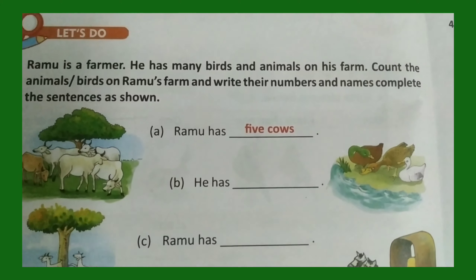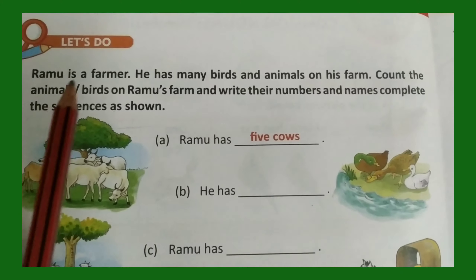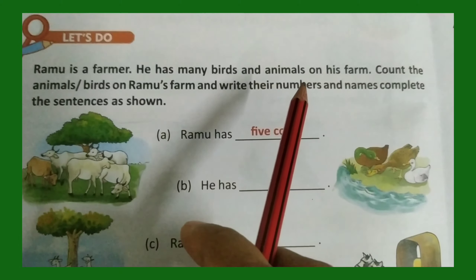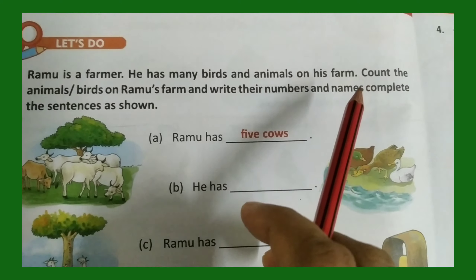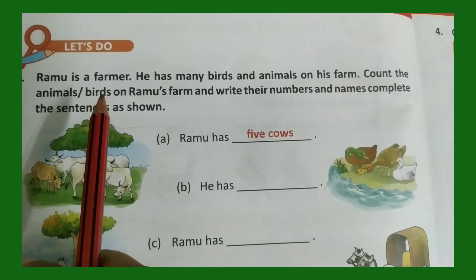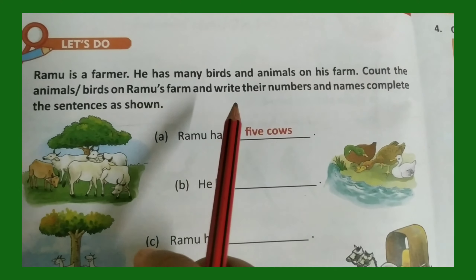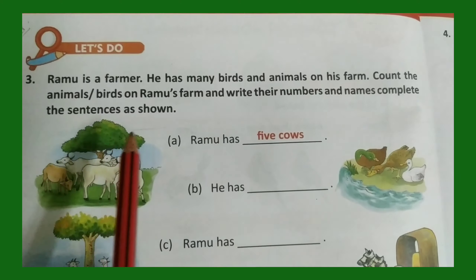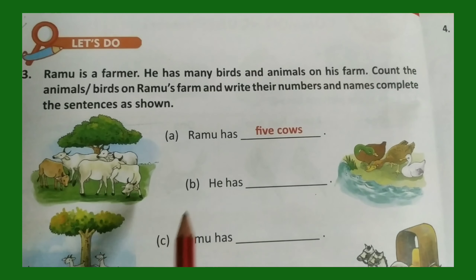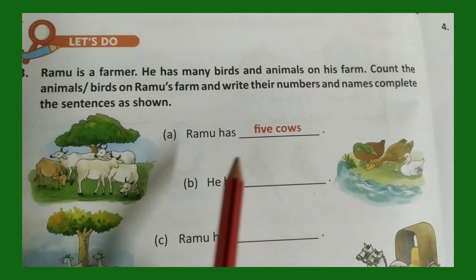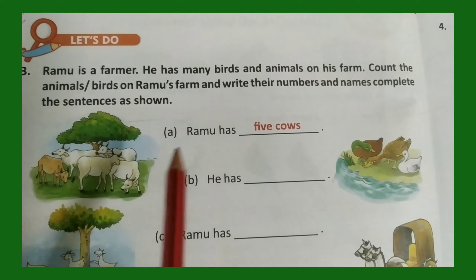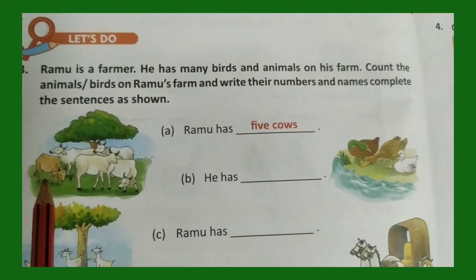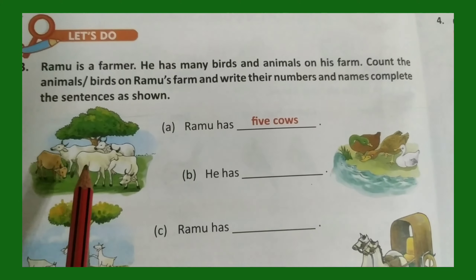Page 8: Ramu is a farmer. He has many birds and animals on his farm. Count the animals and birds on Ramu's farm, write their numbers and names, and complete the sentences as shown. Look at the picture — the first one is done. Ramu has five cows. Let us count: one, two, three, four, five. More than one, so it becomes cows.